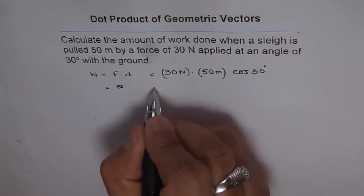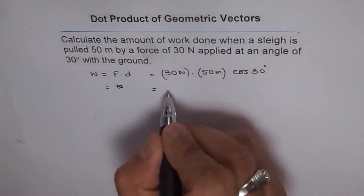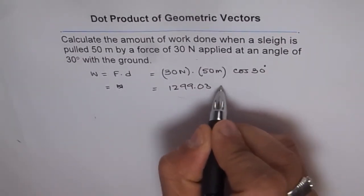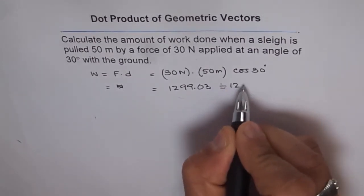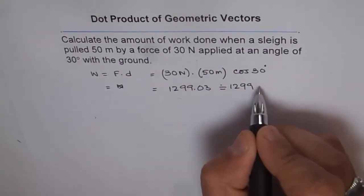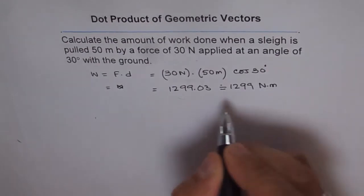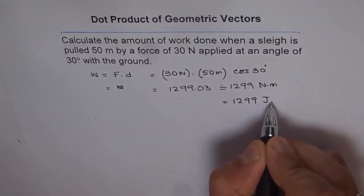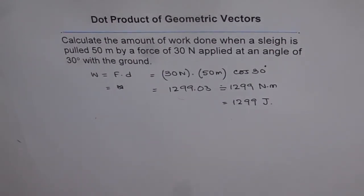This gives 1299.03, or approximately 1299 newton meters, which you can write as 1299 joules.